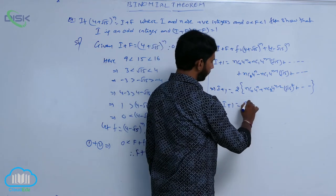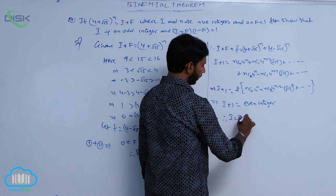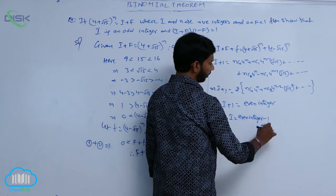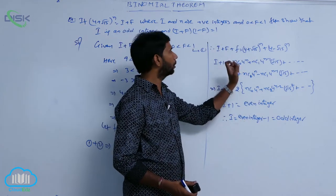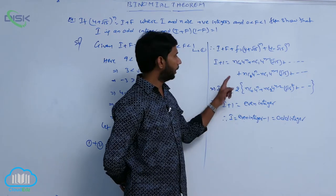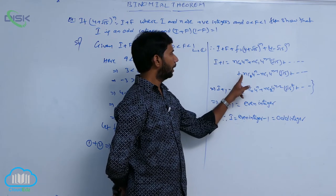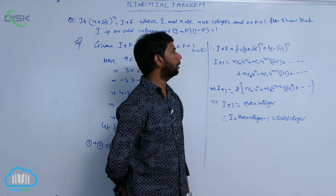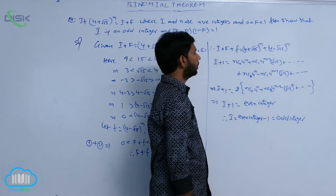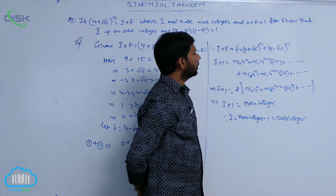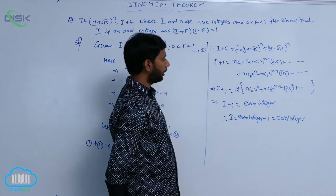That implies i + 1 = even integer. Therefore, i = even integer - 1 = odd integer. This proves the first part: i is an odd integer.